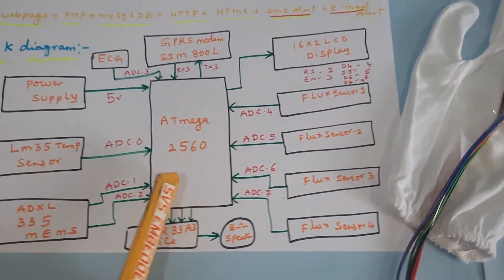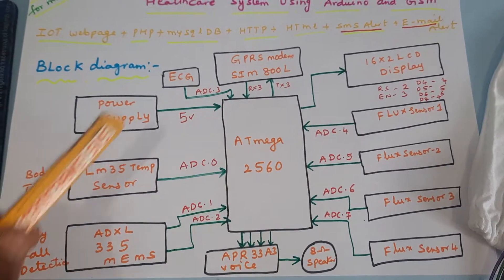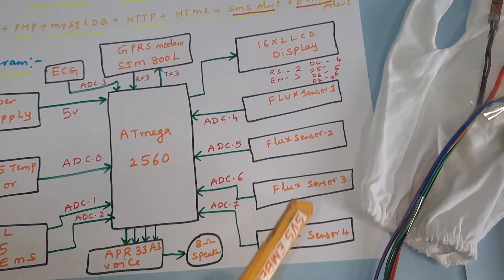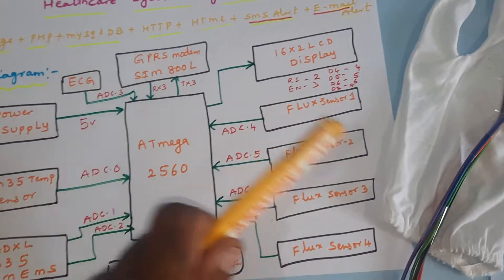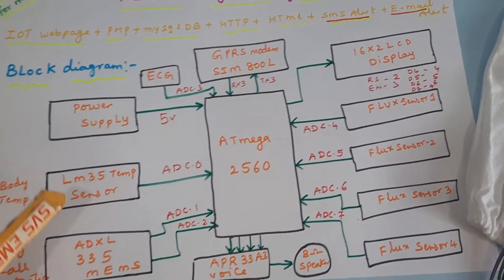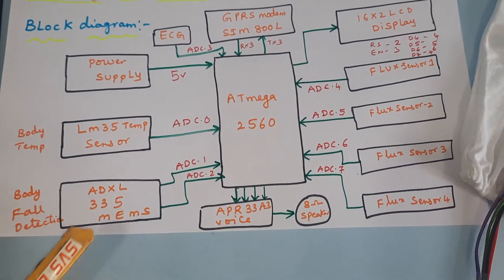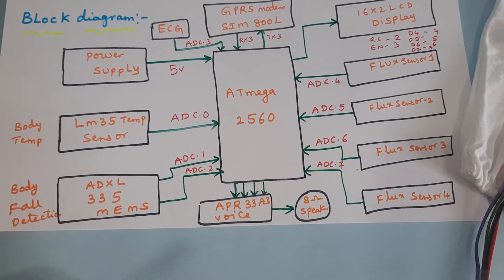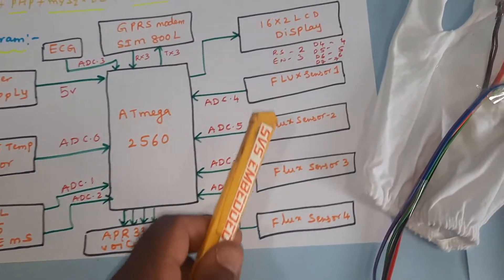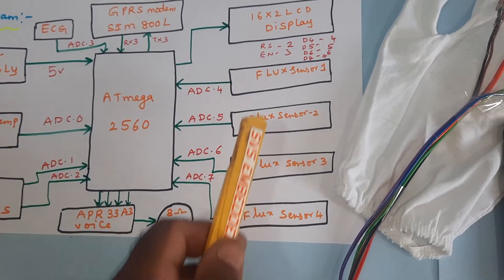We are using the Arduino Mega 2560 control board and a total of seven sensors: an ECG sensor, LM35 body temperature sensor, ADXL335 body fault detection sensor, and four flex sensors.